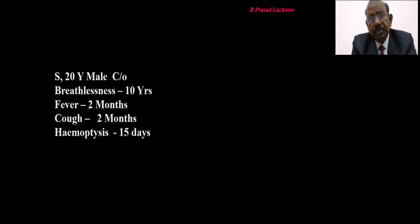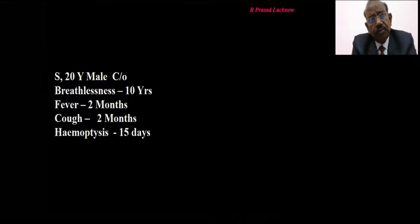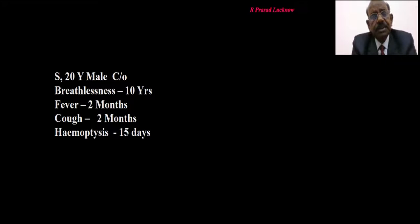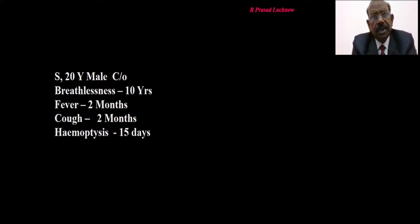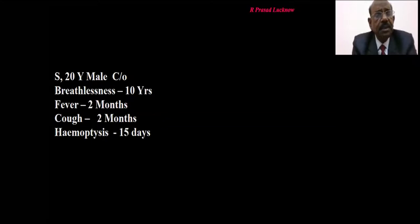One of the causes of bronchiectasis is allergic bronchopulmonary aspergillosis. In ABPA, the bronchiectasis is usually called proximal bronchiectasis — usually seen occurring at the proximal bronchi rather than at the periphery. This proximal word is still being debated, but most cases of ABPA who have bronchiectasis show it is proximal in nature. Bronchiectasis is one of the very important signs in CT thorax for ABPA.